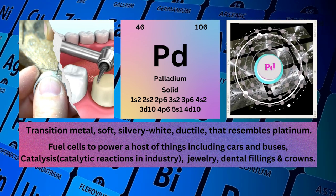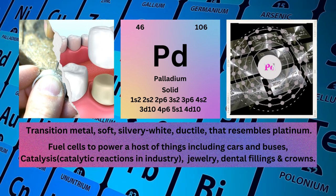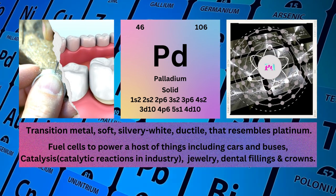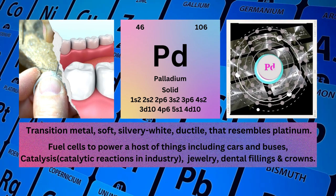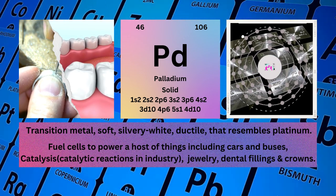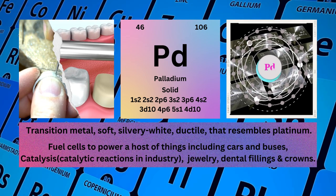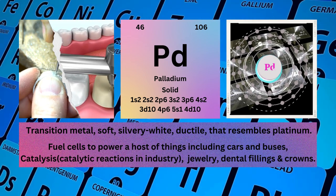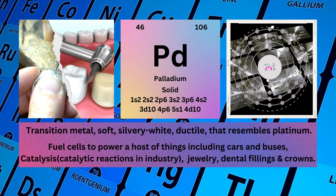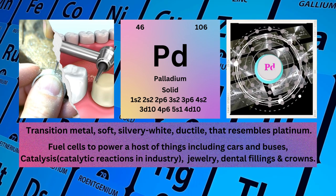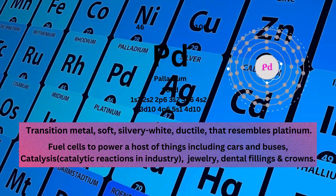Electronic configuration: 1s² 2s² 2p⁶ 3s² 3p⁶ 4s² 3d¹⁰ 4p⁶ 5s¹ 4d¹⁰. Physical properties: transition metal, soft, silvery white, ductile, resembles platinum. Palladium is used in fuel cells to power cars and buses, catalytic reactions in industry, jewelry, dental fillings, and crowns.